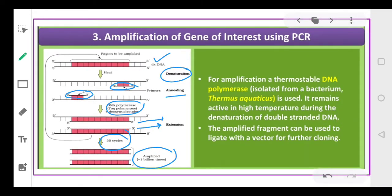For amplification, we use thermostable DNA polymerase. Thermostable means this enzyme can work at high temperatures. DNA enzymes are proteins, and proteins denature at high temperatures. This thermostable DNA polymerase remains active even at the high temperature at which denaturation of double-stranded DNA is occurring. The amplified fragment can then be used to ligate with a vector for further cloning.